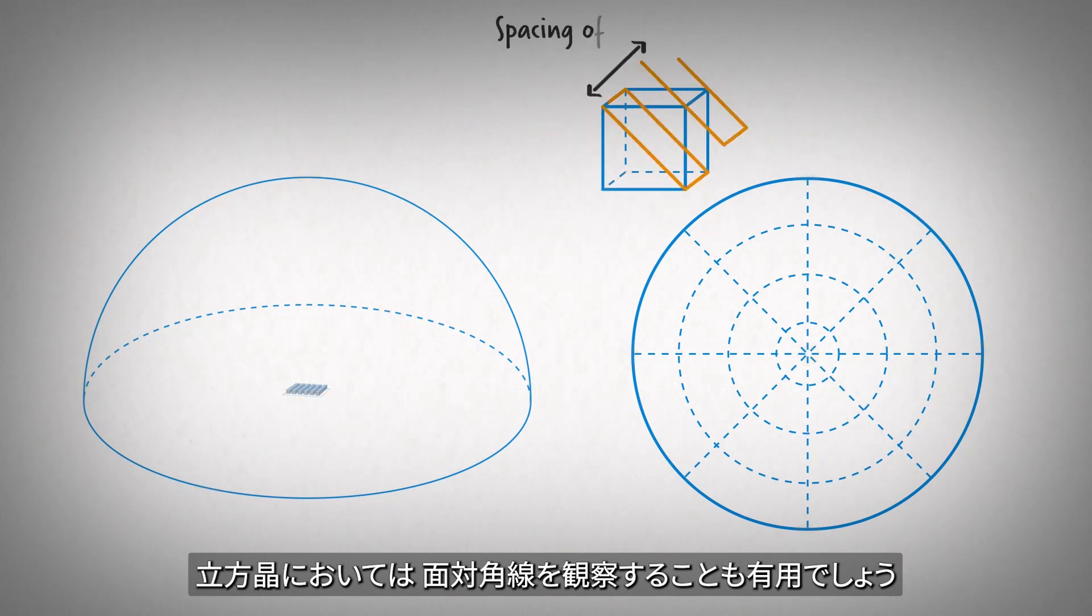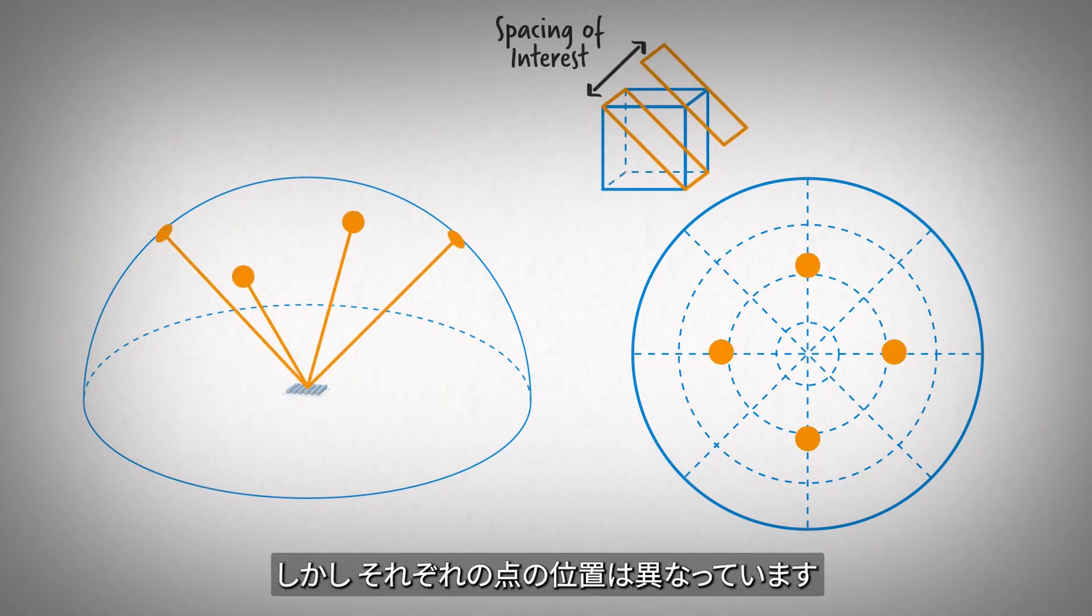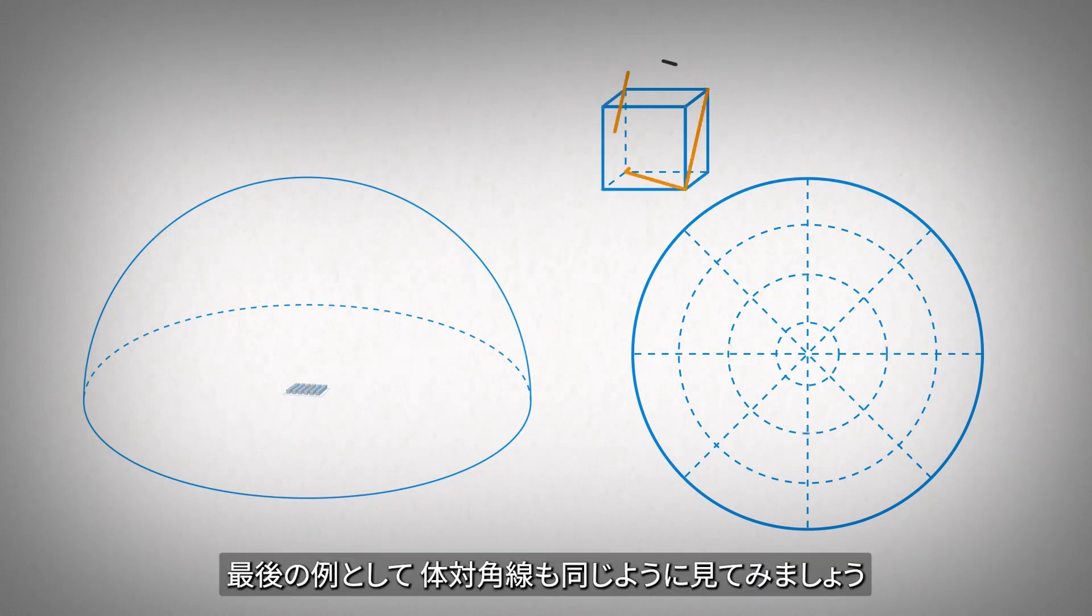It may also be useful to look at the face diagonal of the cube-shaped crystals. In this case, we also see a spot pattern, but the spots are located at different locations. And as a final example, we could look at the body diagonal in a similar fashion.